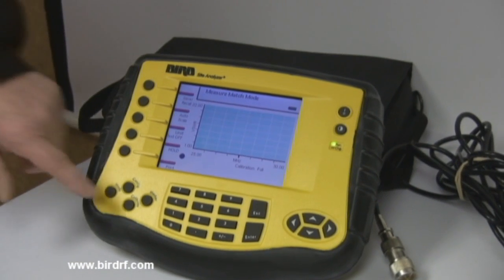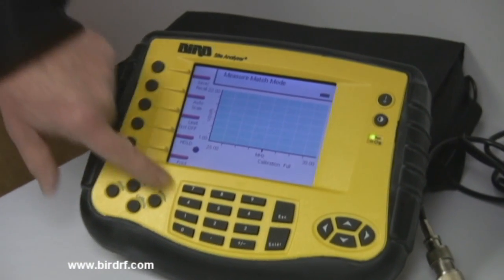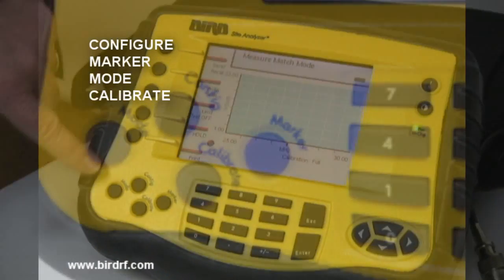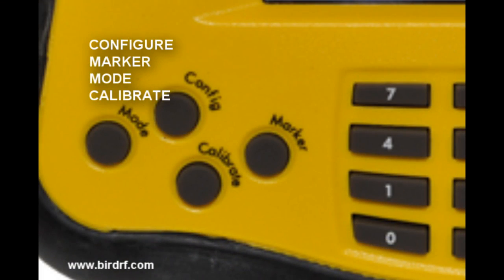The sight analyzer has four buttons that control the main functions of the instrument and they are configure, marker, mode, and calibrate.